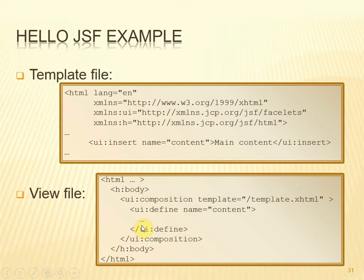Where the ellipsis is, is where we put our content — whatever we want to display within that template at the point for 'content' goes there. Take a look at the code in the example that you can download from Blackboard and see how the template and the views work.